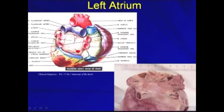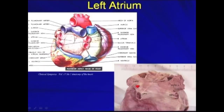For the left atrium, it is situated in the posterior aspect of the heart. There are four pulmonary veins draining into the left atrium: the right superior pulmonary vein, the right inferior pulmonary vein, the left superior pulmonary vein, and the left inferior pulmonary vein. These veins are especially important when we perform radiofrequency ablation of atrial fibrillation.